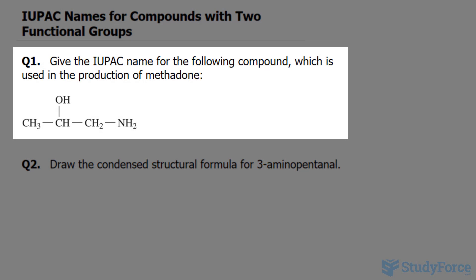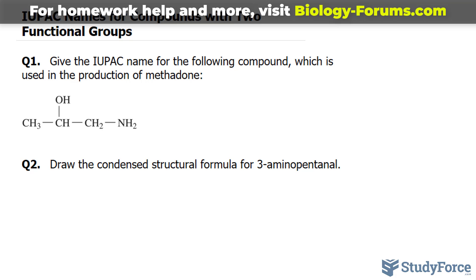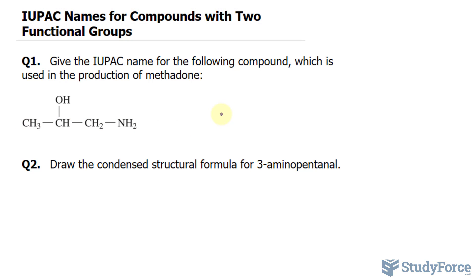The question reads: give the IUPAC name for the following compound, which is used in the production of methadone. The first thing that we want to do is write out the longest carbon. The name of the longest carbon here is three carbons long, so we'll start with propane.